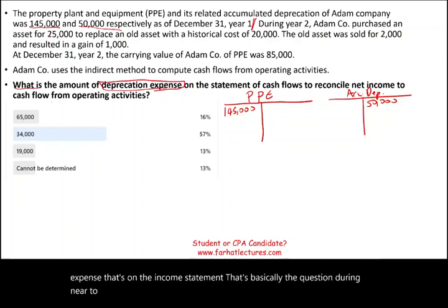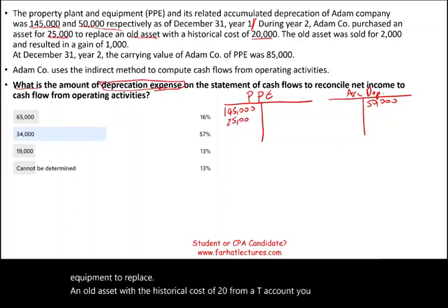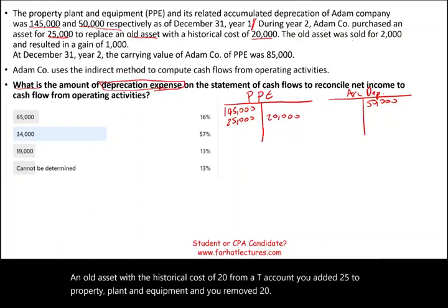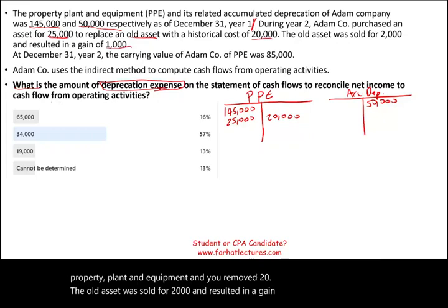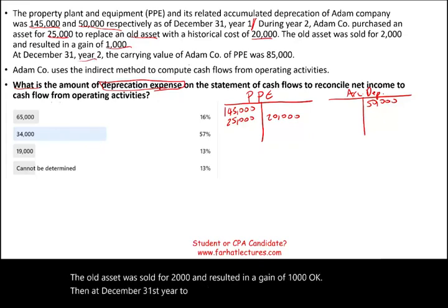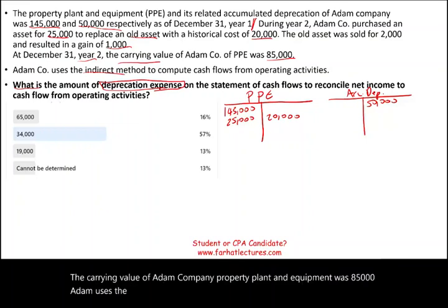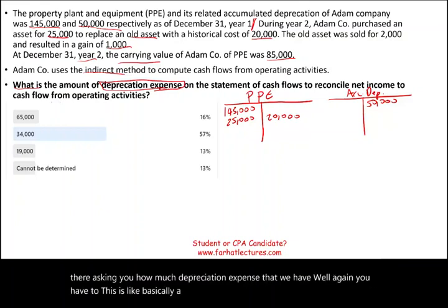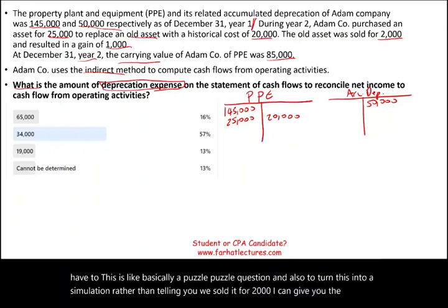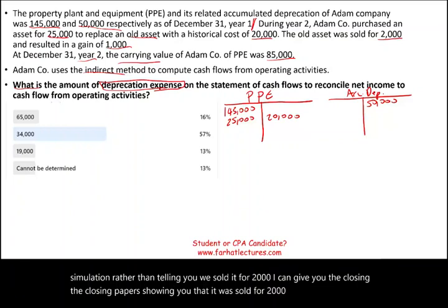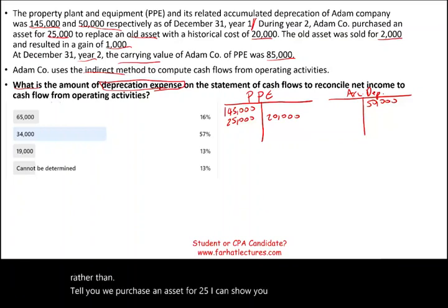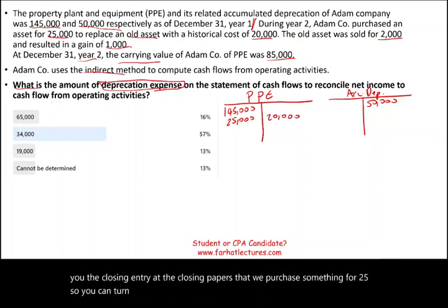During year two, the company purchased an asset for $25,000 — property, plant and equipment — to replace an old asset with a historical cost of $20,000. From a T-account perspective, you added $25,000 to PP&E and removed $20,000. The old asset was sold for $2,000 and resulted in a gain of $1,000. Then at December 31st, year two, the carrying value of Adam Company's property, plant and equipment was $85,000. Adam uses the indirect method to compute cash flow from operating activities.